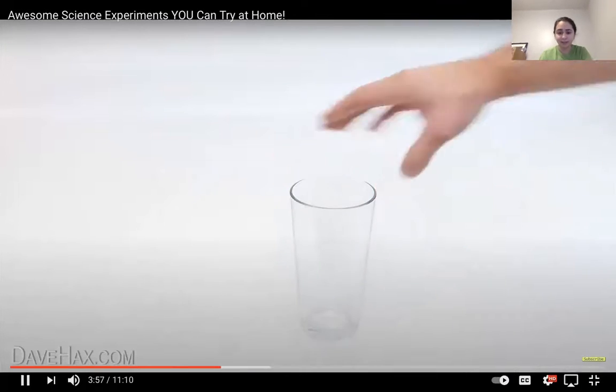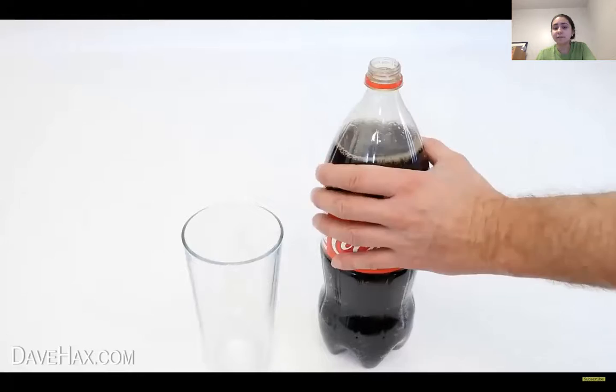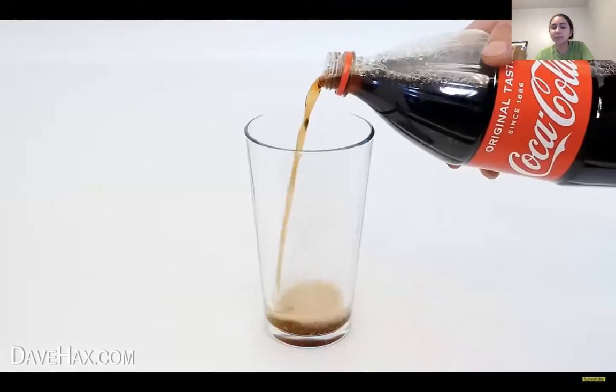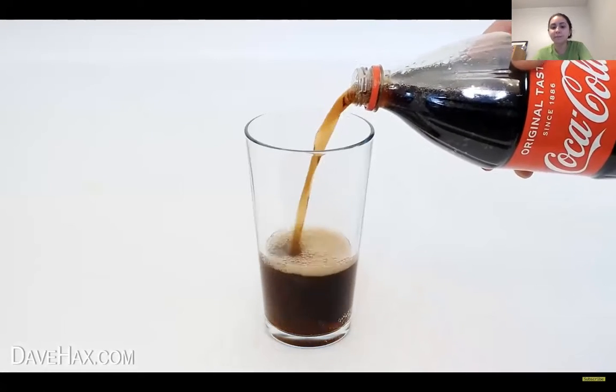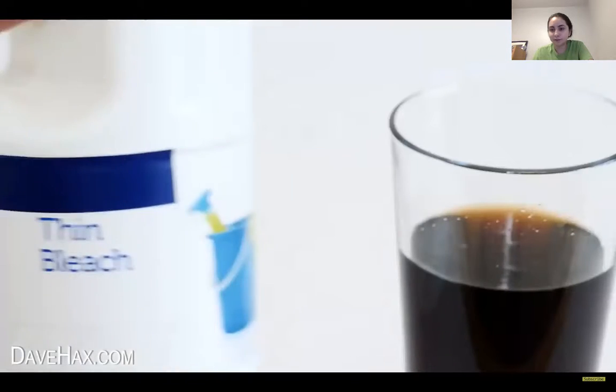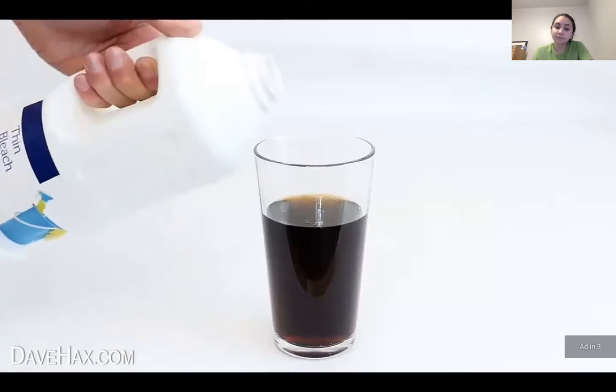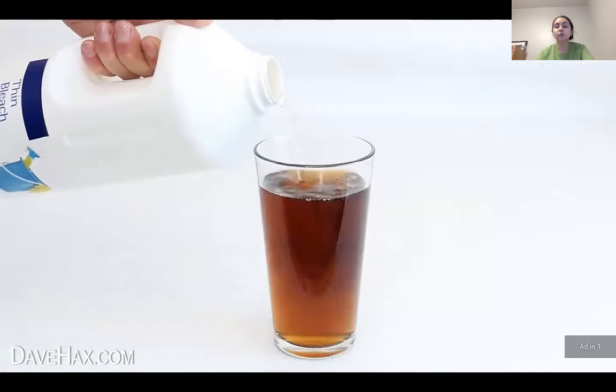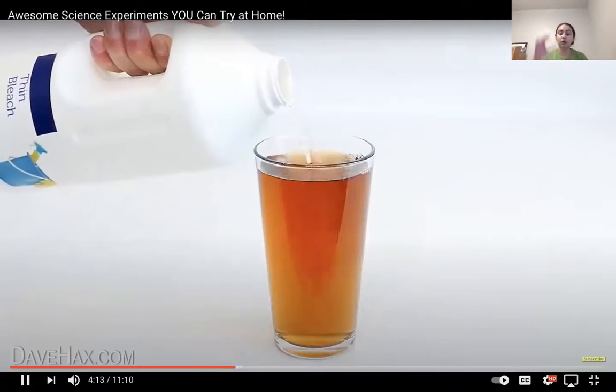Taking a drinking glass and filling it with coke about two-thirds of the way, or about two-fifths of the way. Then I'm taking some bleach and I'm using it to top up the glass and you put enough bleach for the liquid to reach all the way to the top.